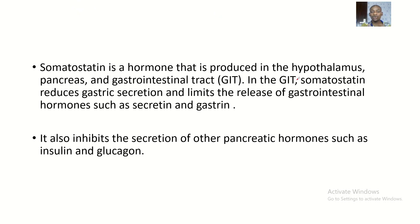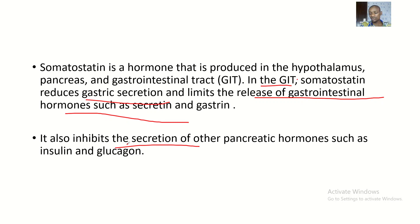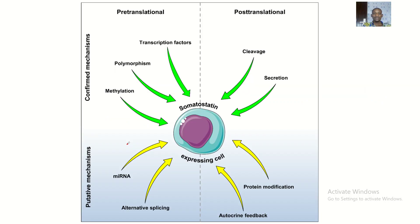Somatostatin is a hormone produced in the hypothalamus, pancreas, and gastrointestinal tract. In the GI tract, somatostatin reduces gastric secretion and limits the release of gastrointestinal hormones such as secretin and gastrin. It also inhibits the secretion of other pancreatic hormones such as insulin and glucagon. So basically, the action of somatostatin is inhibitory.